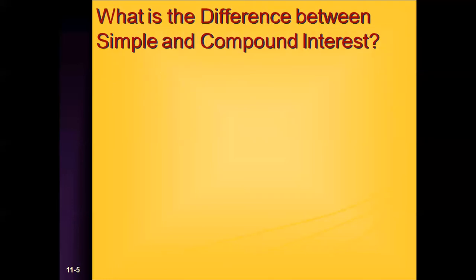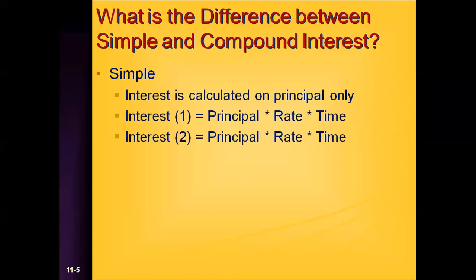Now let's start talking about some of the math involved in this. This will be a review for most of you. Let's talk about simple versus compound interest. Simple interest is pretty straightforward. It's the interest that is calculated on the amount of principal, whether that's the amount of a loan or the amount that you invest. It's only on the principal and the calculation is interest equals principal times rate times time. That would be for period one. For period two, same calculation. Interest equals principal times rate times time.